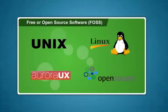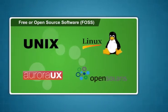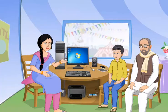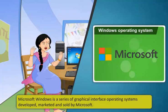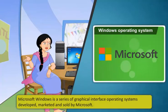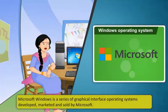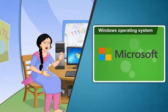The most common types of open source software are Unix, Linux, Aurora UX, and Open Solaris. Let's learn about Microsoft Windows, which is one of the most popular operating systems. Microsoft Windows is a series of graphical interface operating systems developed, marketed, and sold by Microsoft. Most of the computers that we use come with a pre-installed Microsoft Windows operating system.